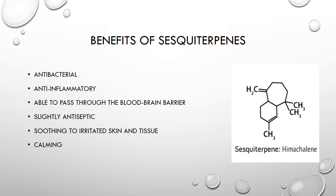The next type of terpene found in essential oils is sesquiterpenes. Some of the benefits of sesquiterpenes include being antibacterial, anti-inflammatory, able to pass through the blood-brain barrier, slightly antiseptic, soothing to irritated skin and tissue, and calming. The picture here is a type of sesquiterpene found in essential oils.